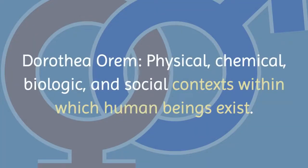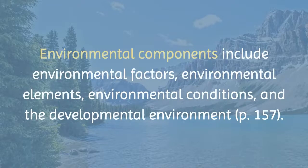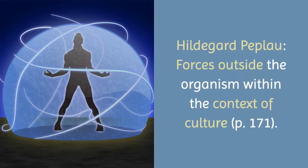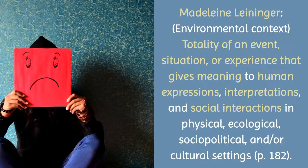Orem defined the environment as physical, chemical, biologic, and social contexts within which human beings exist. Components included environmental factors, elements, conditions, and the developmental environment. Forces outside the organism within the context of culture is Peplau's definition of the environmental metaparadigm. Leininger said the environmental context was the totality of an event, situation, or experience that gives meaning to human expressions, interpretations, and social interactions in physical, ecological, socio-political, and cultural settings.